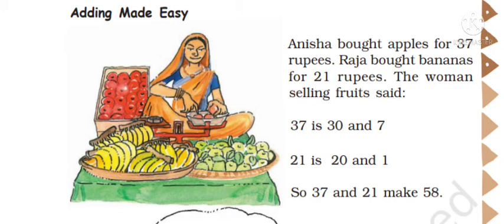Listen. Anisha bought apples for 37 rupees. Raja bought bananas for 21 rupees. The woman selling fruits said 37 is 30 and 7, 21 is 20 and 1, so 37 plus 21 makes 58.